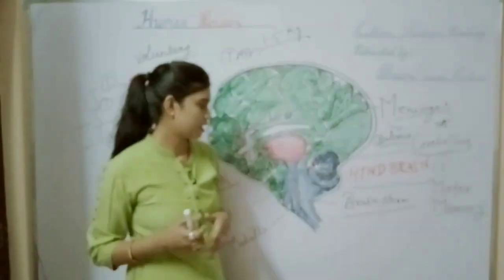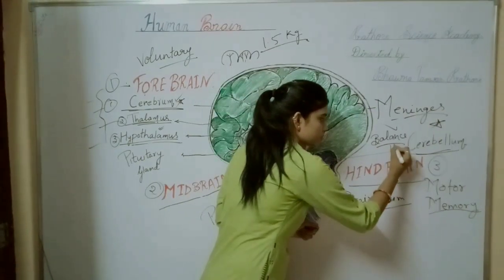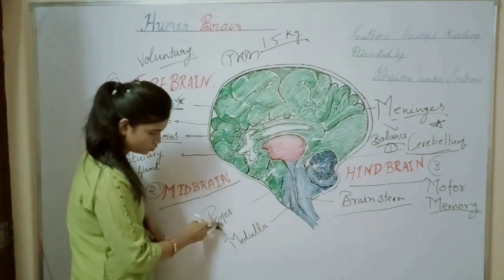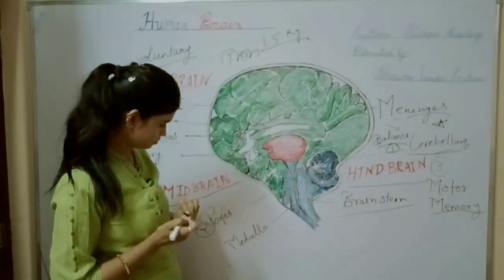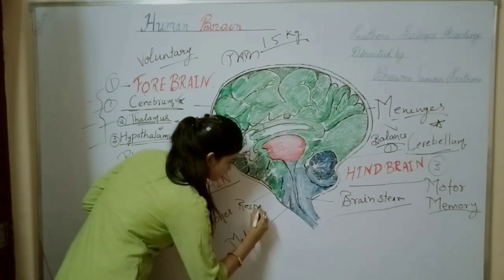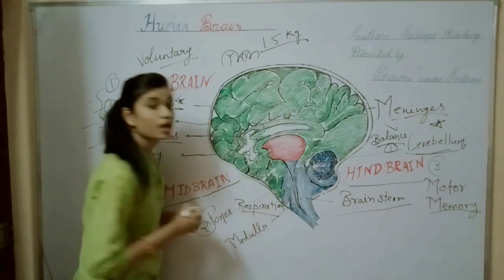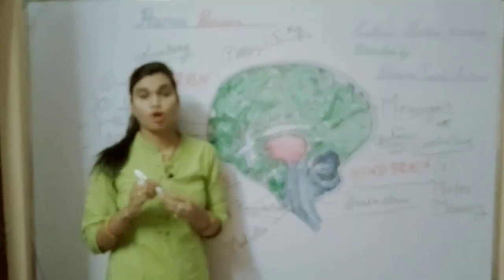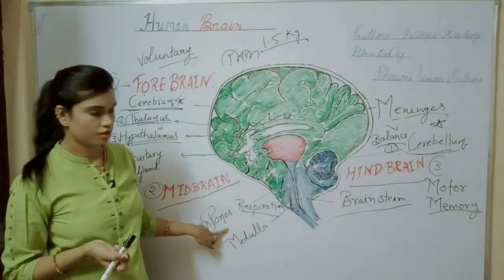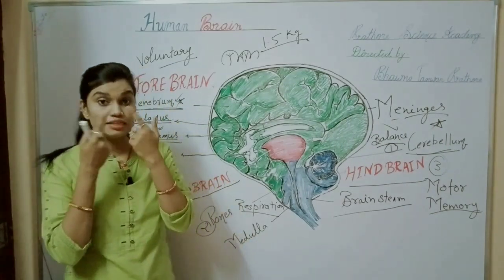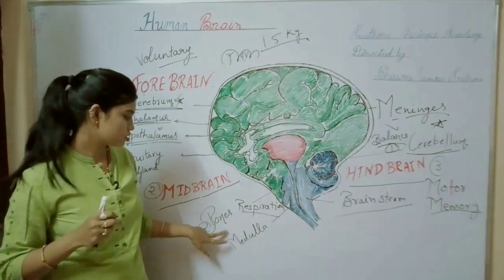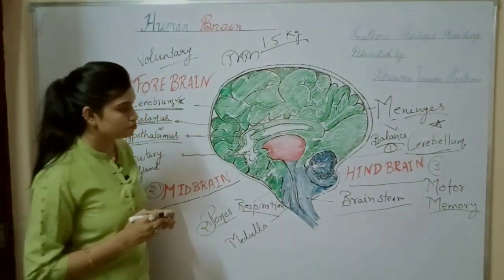The cerebellum is the first part of the hindbrain. If we talk about another part, that is the pons. The pons has two important functions: first, regulation of respiration — proper breathing is monitored by the pons. Second, the coordination of your eyes and ears is monitored by the pons, which is also part of the hindbrain.